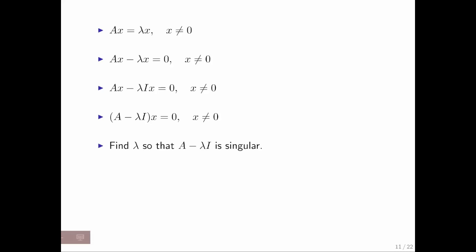What that means is that we're looking for scalars lambda such that A minus lambda I is singular. In other words, if you subtract lambda off the diagonal elements of A, we should end up with a singular matrix, a matrix that does not have an inverse.